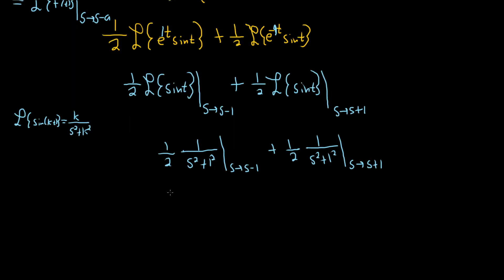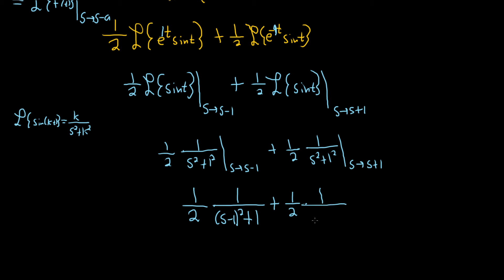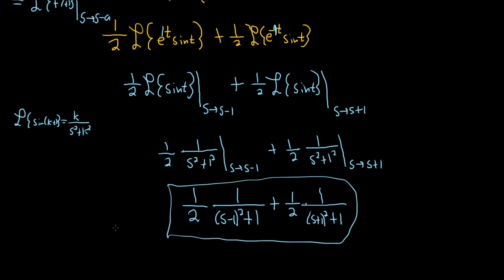Now we replace s with s minus one in the first term, giving one-half times one over s minus one squared plus one. Then plus one-half times one over s plus one squared plus one, replacing s with s plus one. And this is the Laplace transform of hyperbolic cosine of t times the sine of t. I hope this video has been helpful — good luck.